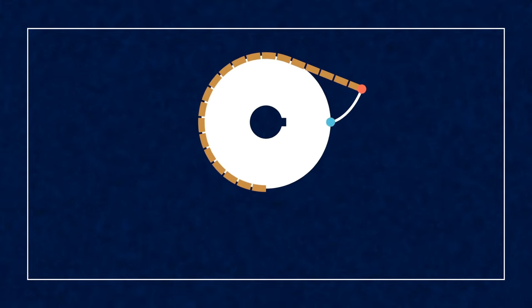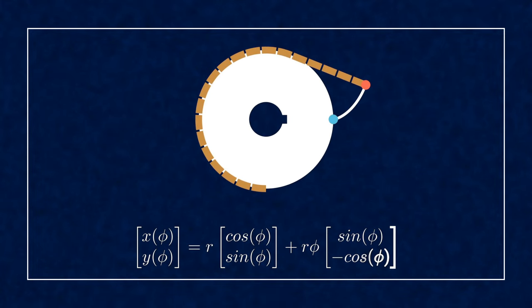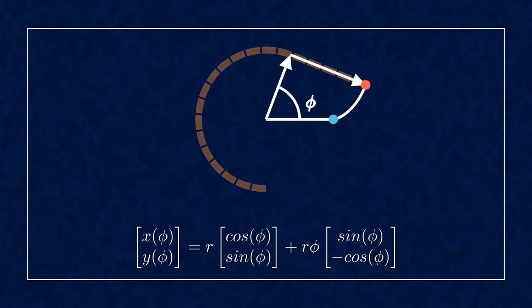Here's the formula for the involute. You have an x and y component of the function depending on the input angle phi. The curve is defined in two parts. The first part is a circle with the radius r. The second part is a tangent vector and its length is equal to the arc length of the base circle corresponding to the angle phi.